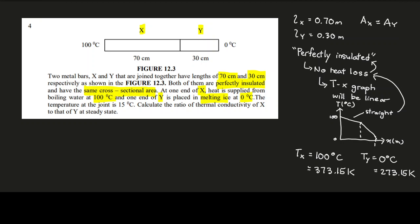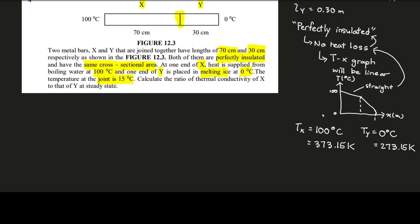The temperature at the joint — the connected part between the two rods — is given as 15 degrees Celsius. I'll call this T_j, where J stands for joint. Converting to Kelvin, T_j = 288.15 K.